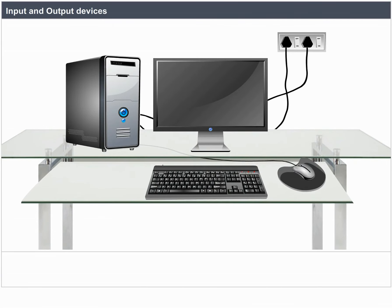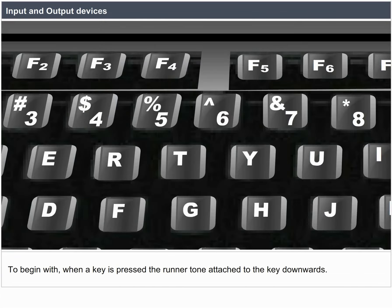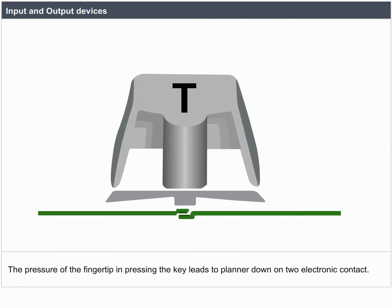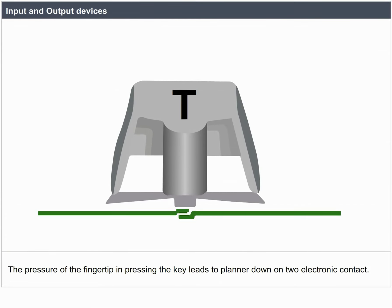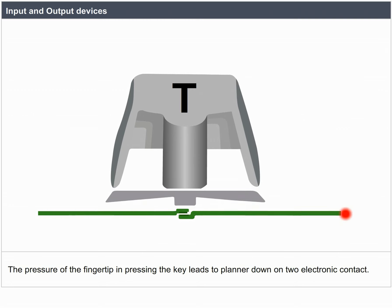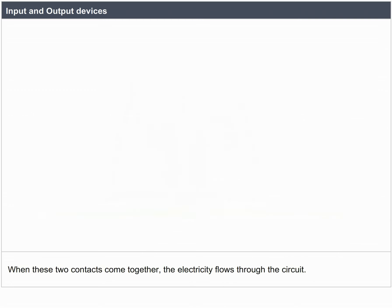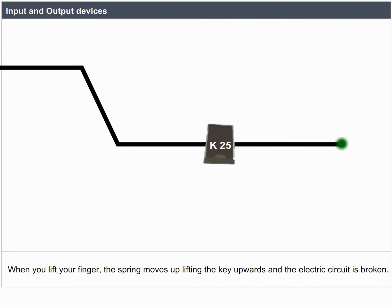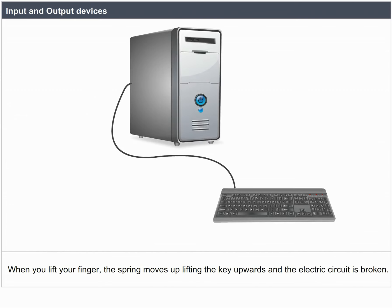When a key is pressed, the rubber dome attached to the key moves downwards. The pressure of the fingertip pressing the key leads the plunger down onto two electronic contacts. When these two contacts come together, electricity flows through the circuit. When you lift your finger, the spring moves up, lifting the key upwards and the electric circuit is broken.